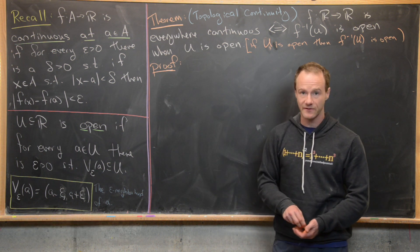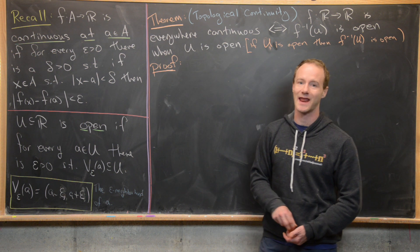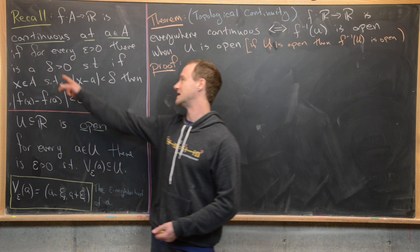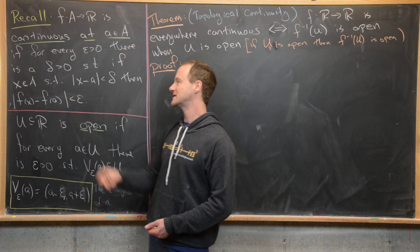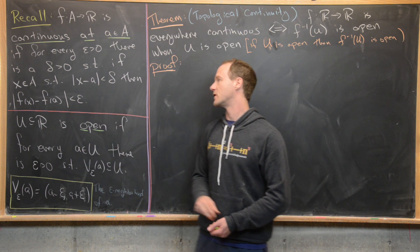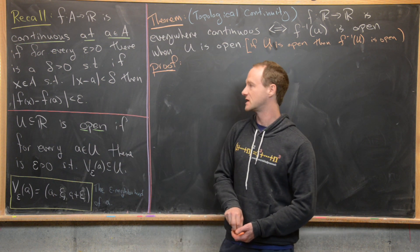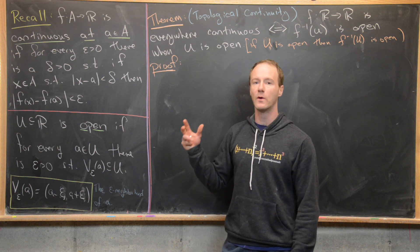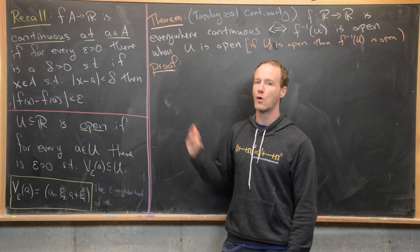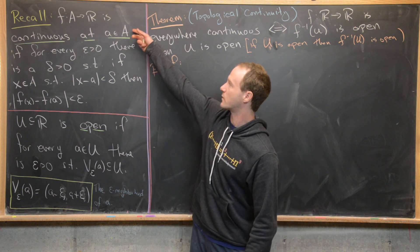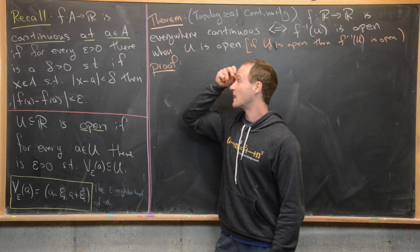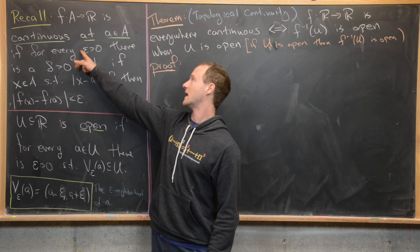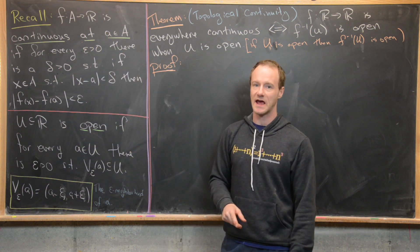Let's recall that f from A to ℝ is continuous at a point a in A if for every epsilon greater than zero there is a delta greater than zero such that if x is in A and the absolute value of x minus a is less than delta, then the absolute value of f(x) minus f(a) is less than epsilon. This is very much a pointwise definition — for every epsilon there is a delta, and this delta is going to depend on epsilon and possibly the point a as well.